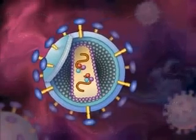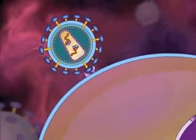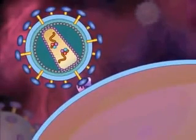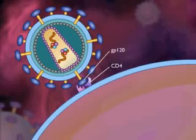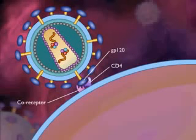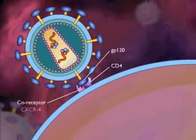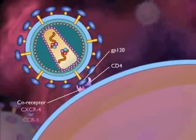To establish infection, HIV must first attach to its host cell. Attachment occurs by interaction between GP120 on the surface of the virus and the CD4 antigen receptor on the surface of the host cell. In addition to the CD4 receptor, there must also be a coreceptor on the host cell. The coreceptor differs for different host cell types: in T lymphocytes, the coreceptor is called CXCR4, whereas on macrophages, the coreceptor is called CCR5.